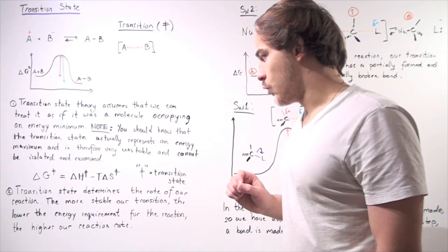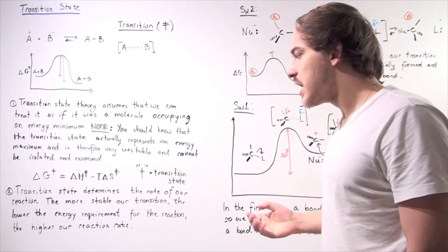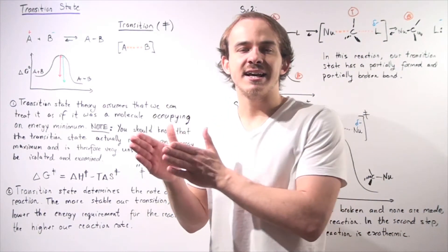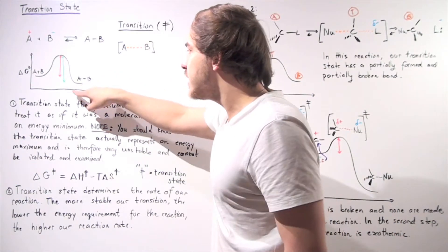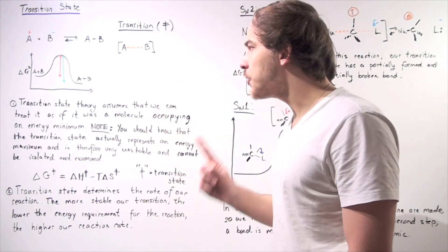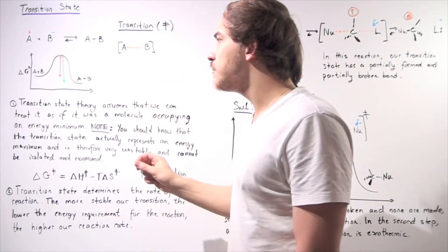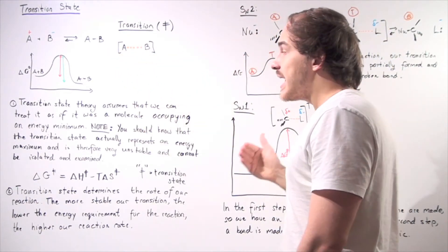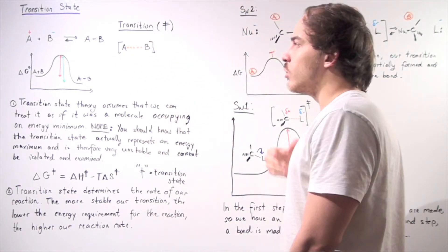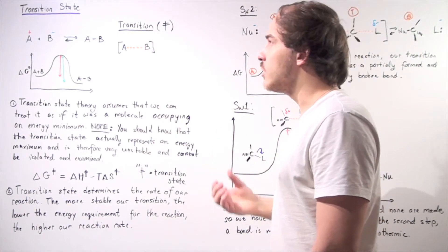The transition state determines the rate of our reaction. The more stable the transition state, the lower the energy requirement, and the higher the reaction rate. Recall that thermodynamics is not the same as kinetics — the stability of reactants and products does not determine the rate of reaction. What actually determines the rate is the energy level of the transition state. A stable transition state means lower activation energy and a faster reaction; an unstable transition state means higher activation energy and a slower reaction.